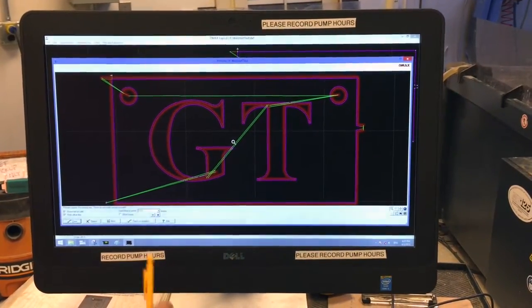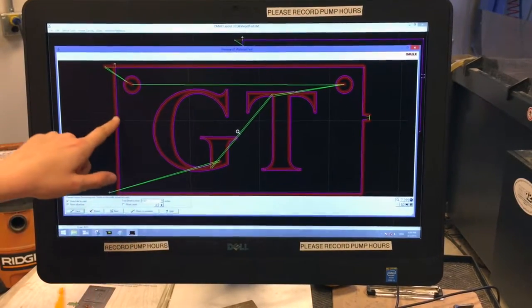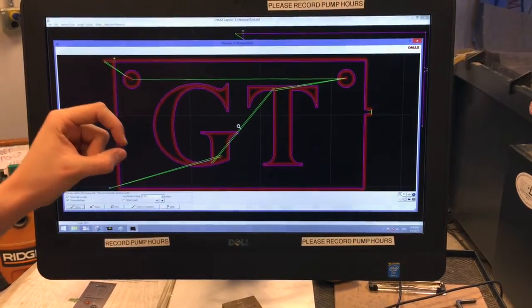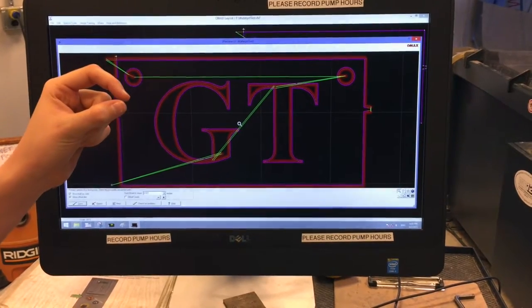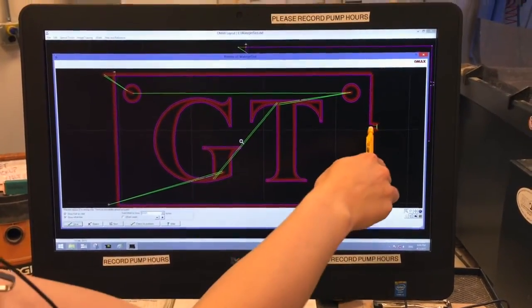Now this shows the path that the nozzle is going to take as it goes through your part. One thing to consider is that this red line here, this red area, represents the offset of the jet. So the jet is 0.021 inches wide. And so that means that it needs to be spaced over a little bit in order to get the right dimensions.